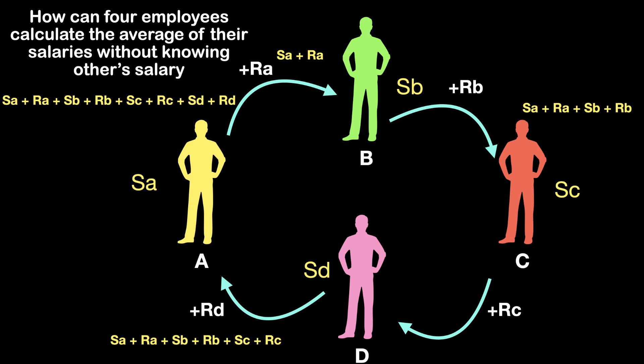Now A subtracts his random amount since A knows the random amount initially added and gives the final figure to B without showing that to D. B will now receive the figure Sa plus Sb plus Rb plus Sc plus Rc plus Sd plus Rd. Here the random amount which was initially added by A is not present.